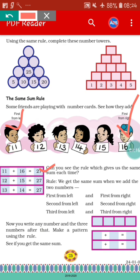Next, second from the left, that is 12, and second from the right, that is 15. So 12 plus 15, again 27. Now they added third from the left, that is 13, and third from the right, that is 14. So 13 plus 14, again 27. We can see that the way they added the numbers, every time they are getting the same result.